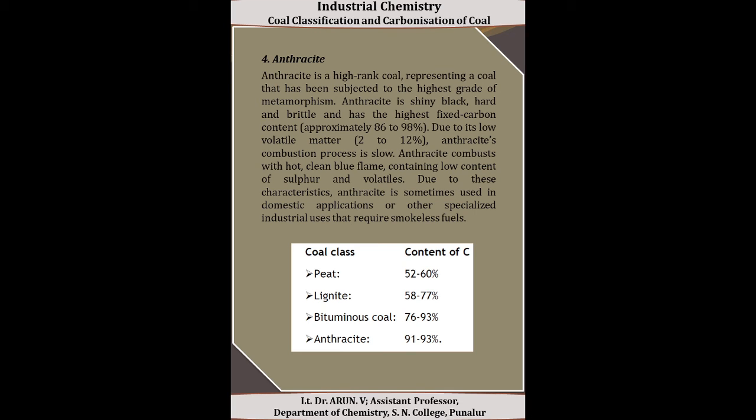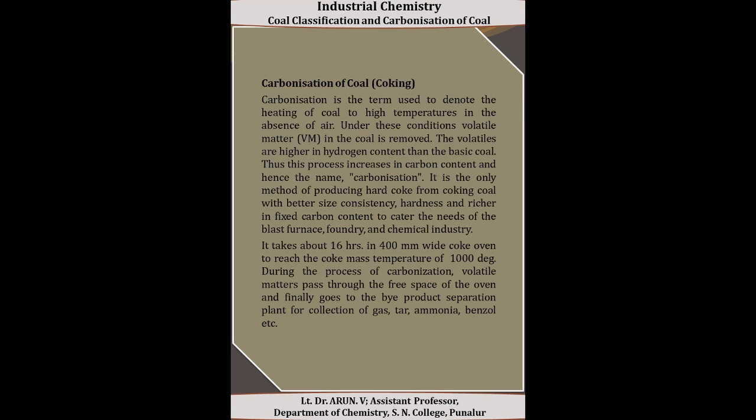In summary: peat contains 50 to 60% carbon, lignite contains 58 to 77% carbon, bituminous coal contains 76 to 93% carbon, and anthracite contains 91 to 98% carbon.